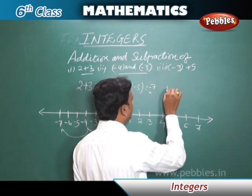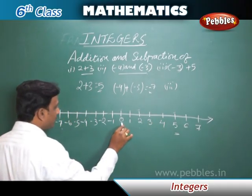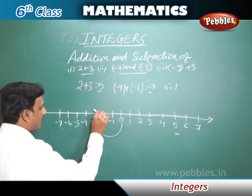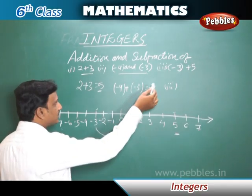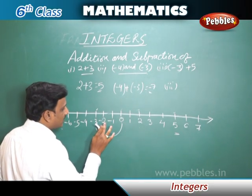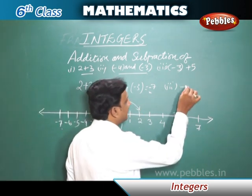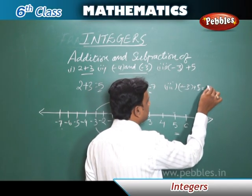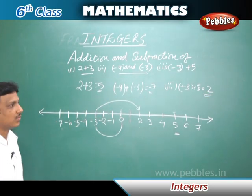Now see the third example: minus three plus five. From zero, we go to minus three. Then, since five is a positive number, we move five positions to the right side — one, two, three, four, five. We reach two. So, minus three plus five equals plus two. In this way, we can do addition on a number line.